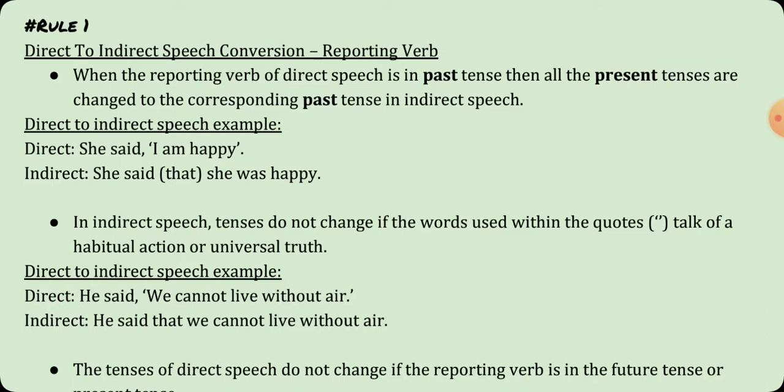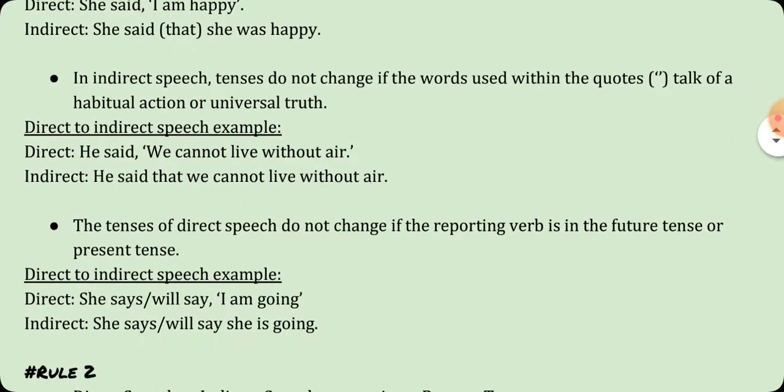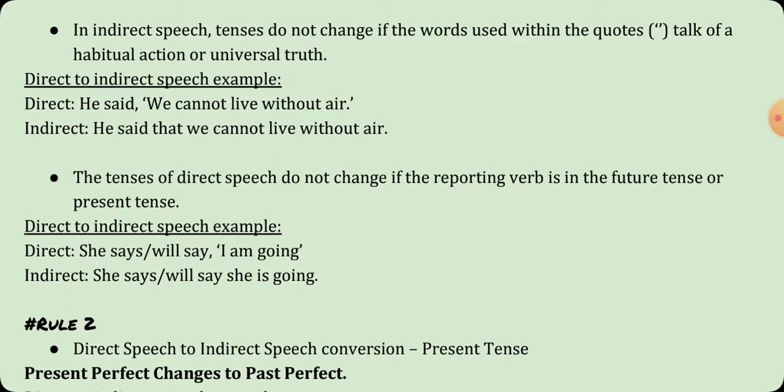In indirect speech, tenses do not change if the words used within the quotes talk of a habitual action or universal truth. For example, 'He said we cannot live without air' — this is a universal truth, so we do not change the tense. In indirect speech the answer would be 'he said that we cannot live without air.' The tenses of direct speech also do not change if the reporting verb is in the future tense or present tense. For example, 'She says or she will say I am going' remains 'she says or she will say that she is going.'